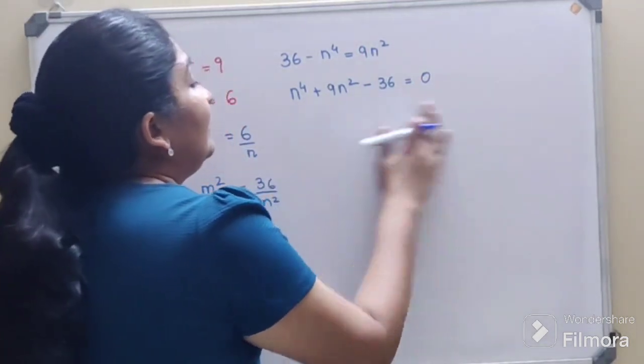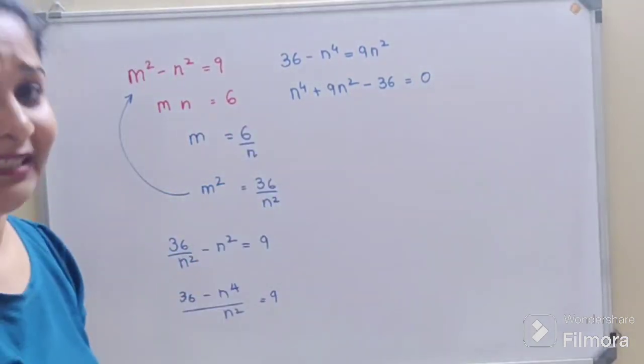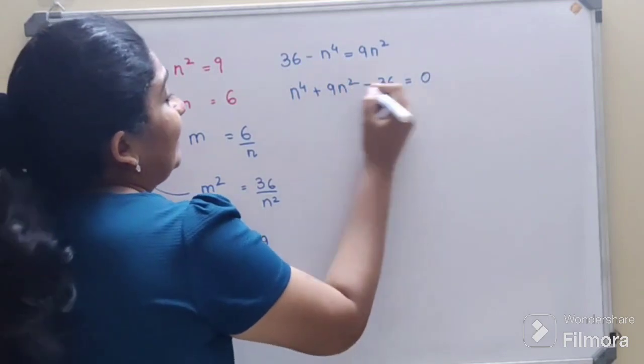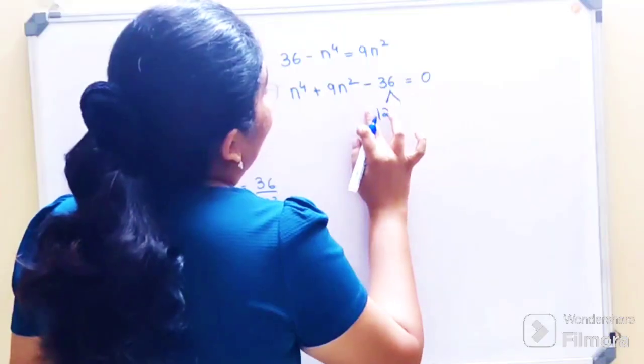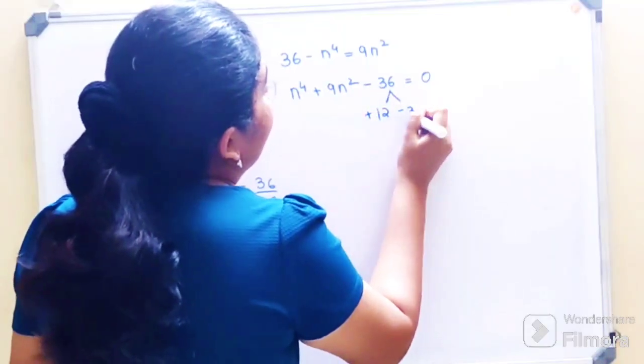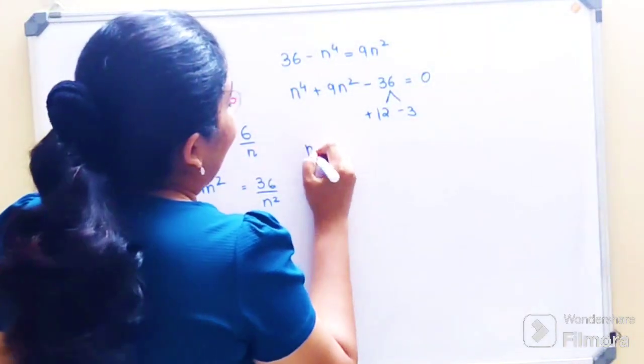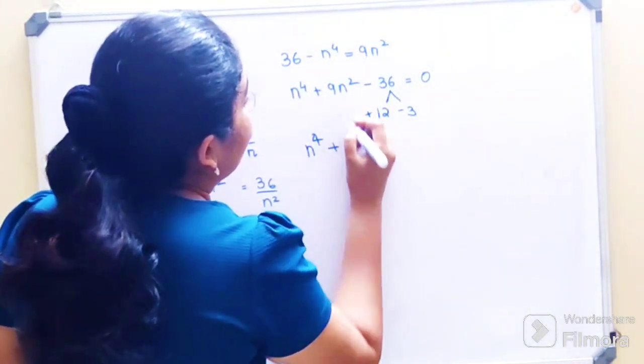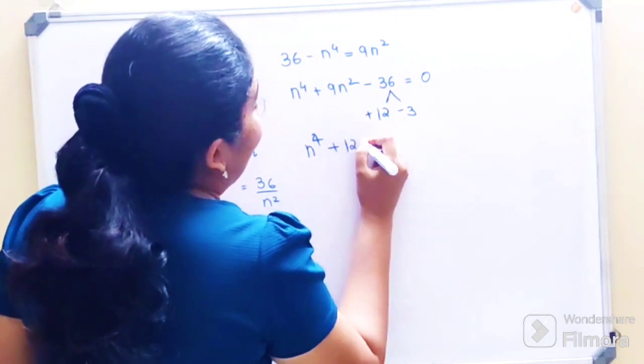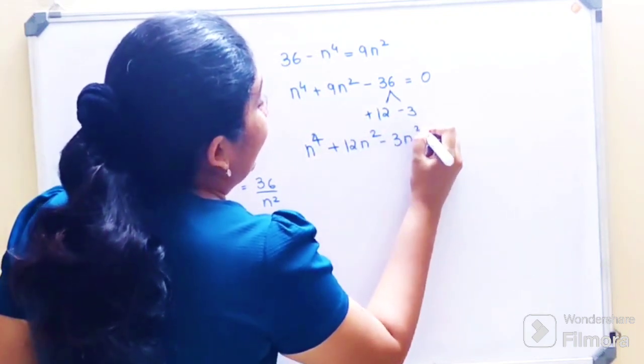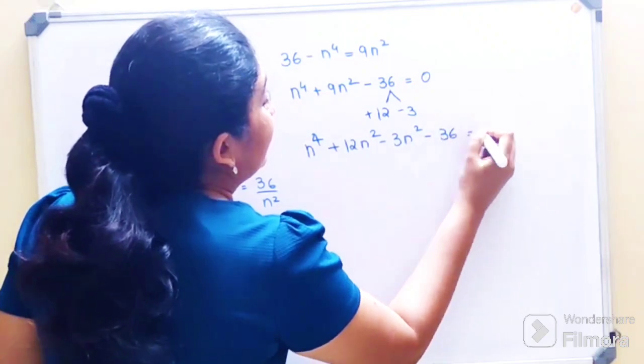Here I can take the factors as what? Plus 12 minus 3, so that will get me a plus 9. So here what we'll have is n raised to 4 plus 12 n square minus 3 n square minus 36 is equals to 0.